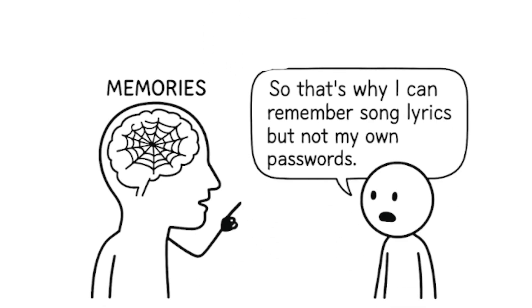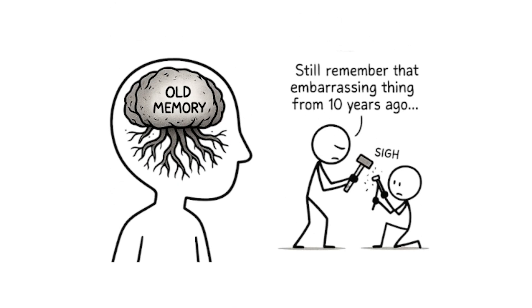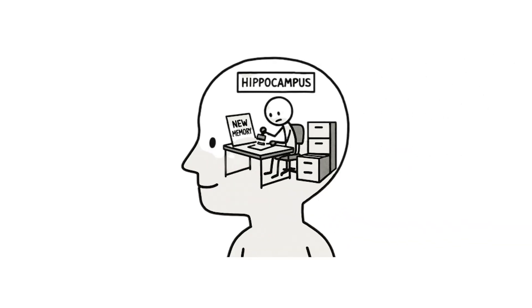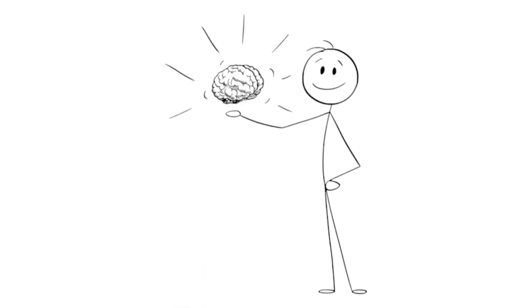Your brain stores memories like a giant web, spread across different areas. Old memories get really deeply wired in, so they're tough to wipe out. Most head injuries mess with your ability to make new memories or maybe erase some recent stuff from right before the accident. This happens because there's a part of your brain called the hippocampus that's like your memory maker, and it gets damaged easily. But all those established memories scattered throughout your brain, they usually stay put.